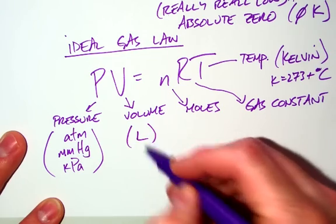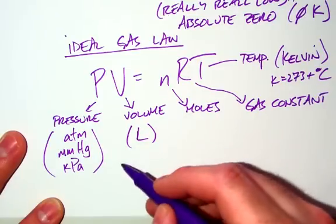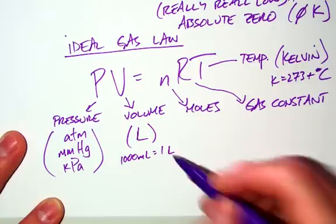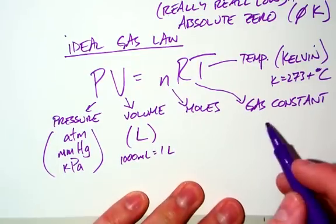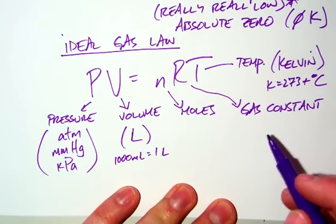Volume is always going to be in liters. If you're ever given a problem where they're in milliliters, remember there's a thousand milliliters in one liter. So you might have to do that conversion. Our gas constant has to do with the unit of pressure.